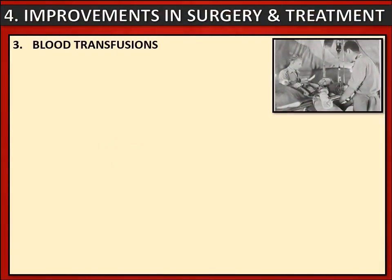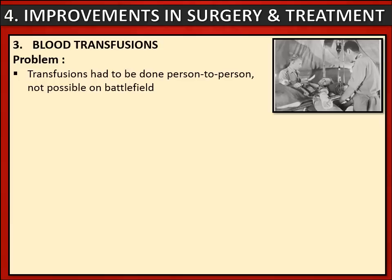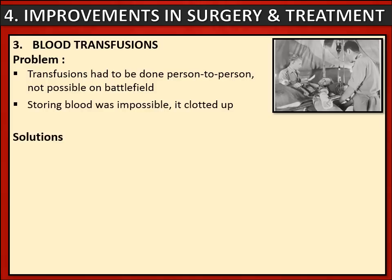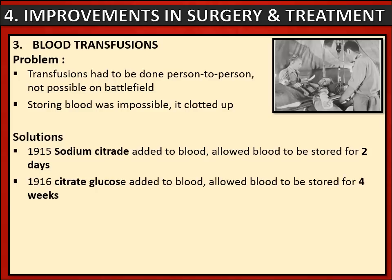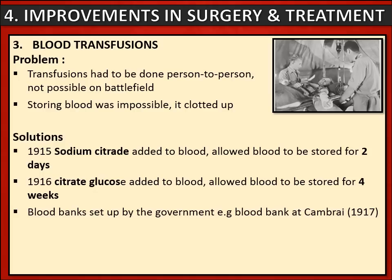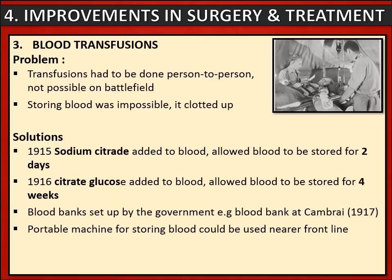Let's look at how blood transfusions were developed during World War I. Transfusions had to be done person to person at the start of the war, and obviously that wasn't possible near battlefields. The other issue was that storing blood was impossible because blood clots up when it leaves the body. So quite a few solutions were needed — they had to find a way of how blood could be stored. In 1915 they added sodium citrate to blood, which allowed blood to be stored for up to two days. In 1916, citrate glucose was added to blood, which allowed blood to be stored for up to four weeks. This meant that governments could now start to set up blood banks, leading to the first blood bank for a battle at Cambrai in 1917. They even discovered how to create a portable machine that could store blood so that it could be used much nearer the front line.